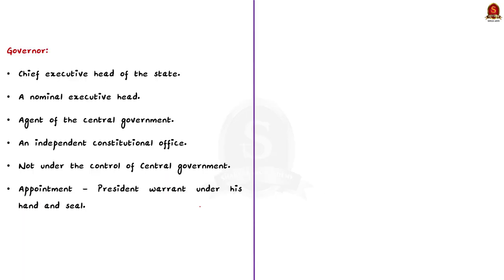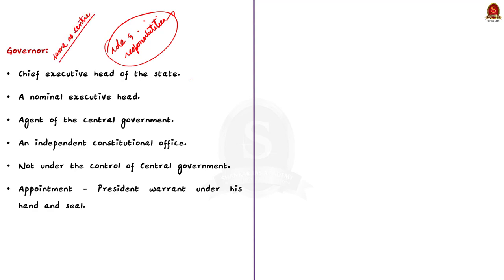The Constitution of India envisages the same pattern of government in the states as that for the center — a parliamentary system. The state executive consists of the governor, the chief minister, the council of ministers, and the advocate general of the state. The governor is the chief executive head of the state, but like the president, he is just a nominal executive head. The governor also acts as an agent of the central government, so the office of governor has a dual role.